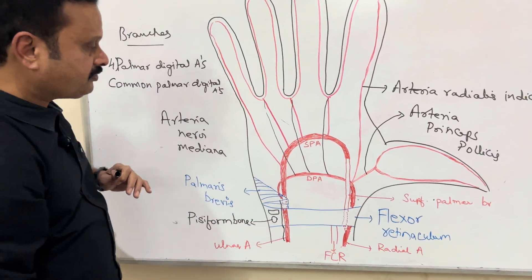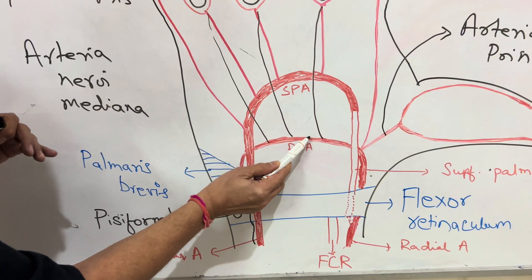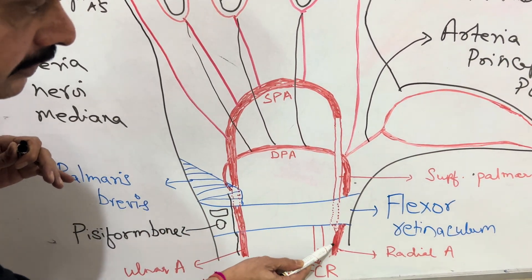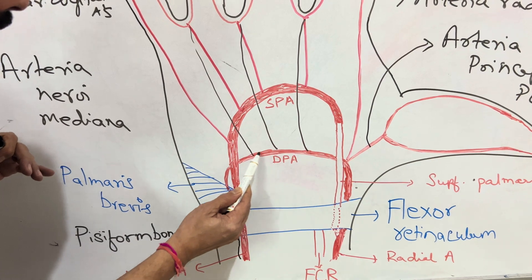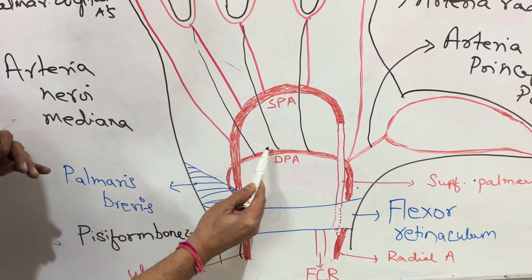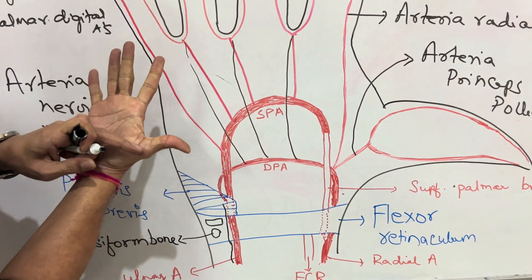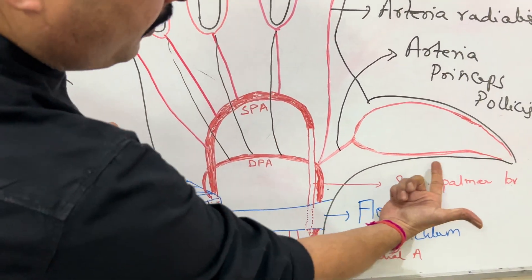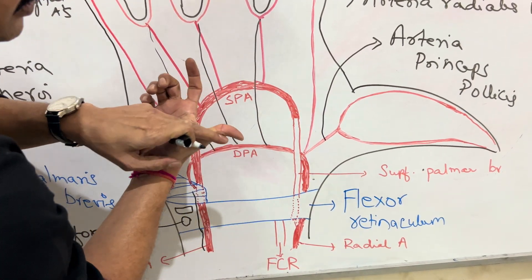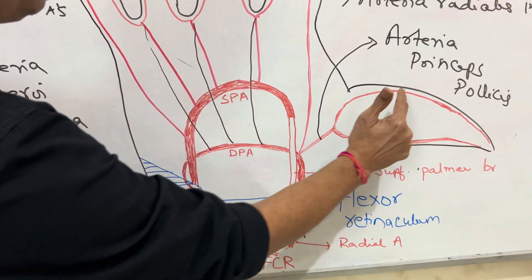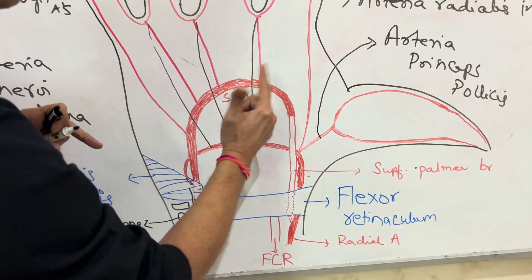The deep palmar arch is formed by the deep branch of the ulnar artery and the trunk of the radial artery from the lateral side. The deep palmar arch is at the level of the upper border of the extended thumb, whereas the superficial palmar arch is at the level of the distal border of the extended thumb.